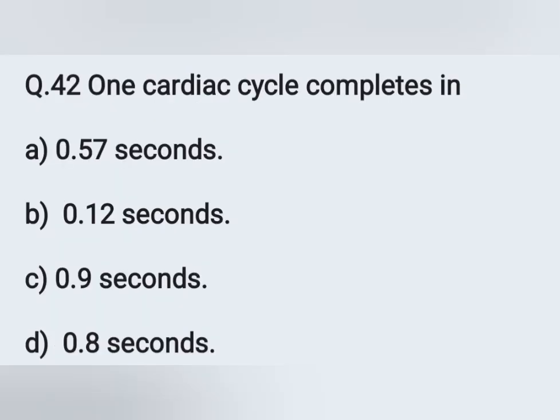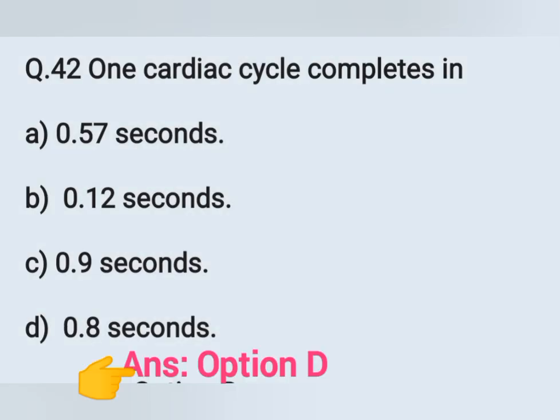Question number 42. One cardiac cycle completes in — Option A: 0.57 second. Option B: 0.12 second. Option C: 0.9 second. Option D: 0.8 second. One cardiac cycle completes in 0.8 second — Option D is the correct answer.